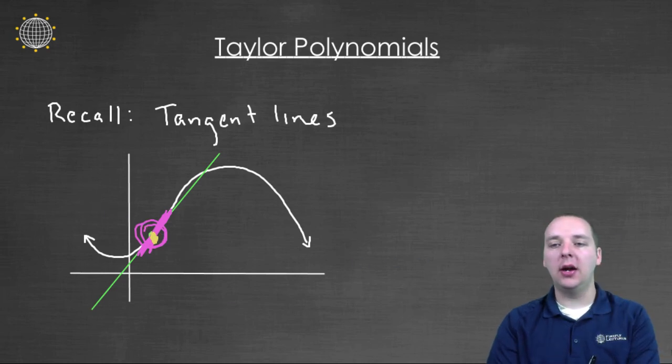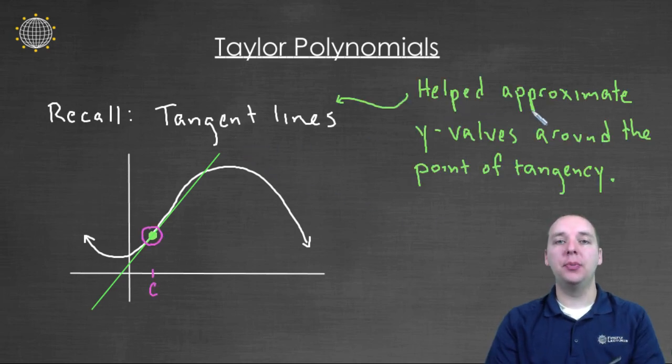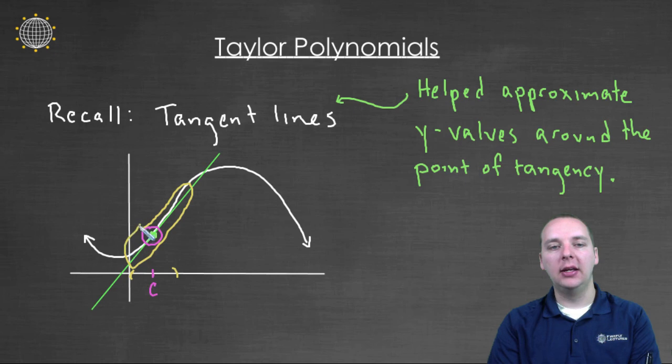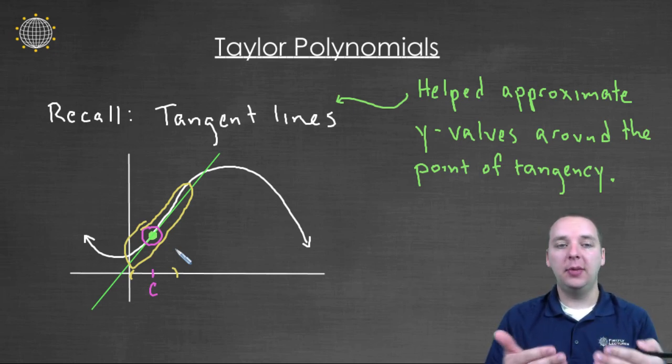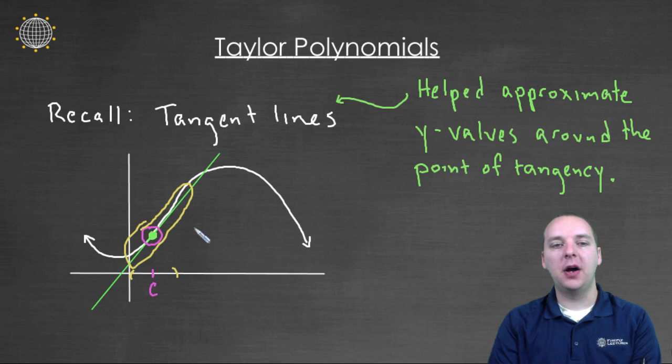Now, why do we care? What's our purpose in reviewing tangent lines here? Well, we recall that tangent lines help us approximate the y-values around the point of tangency. This is a great feature about tangent lines. If you have a point of tangency, let's say right here at c, then you can look before c or after c. You notice the curve basically follows the tangent line. And so if you wanted to know the y-values around c, you could plug them in the original function, or you could plug them in the much easier tangent line. Will they be an exact match? No, but they'll be very close because they're following one another.